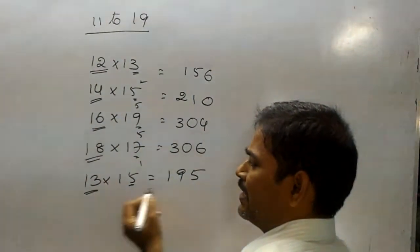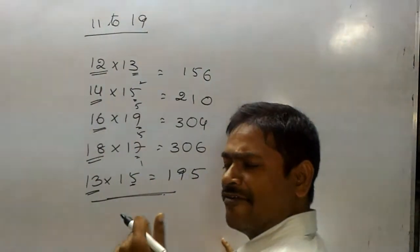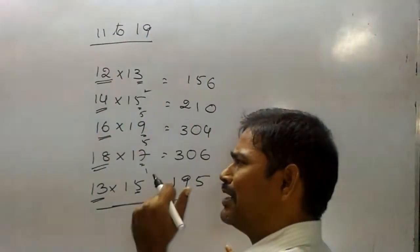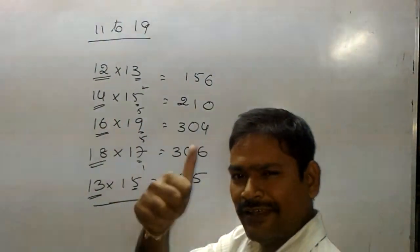Plus 1, 19. I will make my multiplication of 11 and 19. Okay? Right?